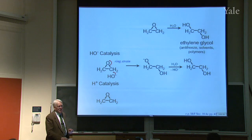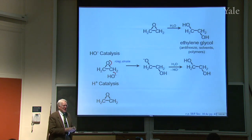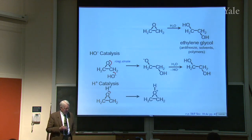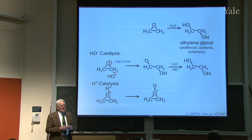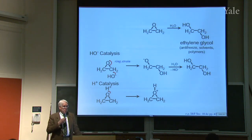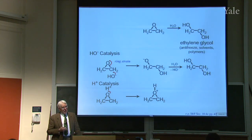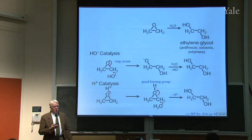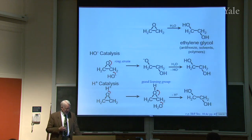With H⁺ catalysis, H⁺ attacks the lone pair on the oxygen, and there's still ring strain but now a much better leaving group — O⁺ rather than O becoming O⁻. Even water can do it now; it doesn't have to be hydroxide. Water comes in and again we get ethylene glycol. So either acid or base catalysis with water will convert ethylene oxide into ethylene glycol.